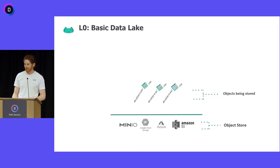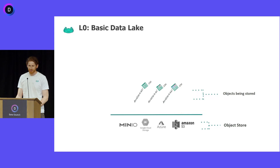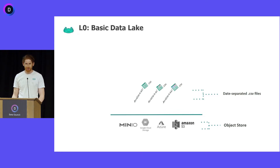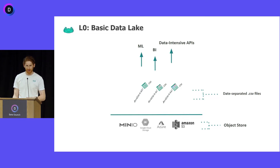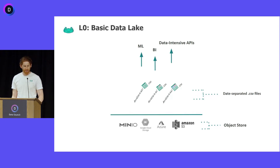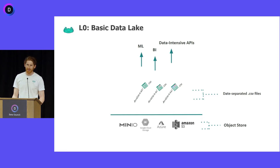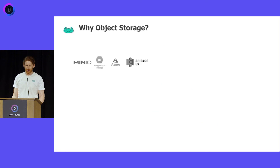If you're just getting started with a data lake, you might have something like CSV files that every day you save under a date partition path. With this basic architecture, you are in a pretty good spot to handle all of the use cases for data, like business intelligence, machine learning, model development, and data intensive APIs or operational analytics. The flexibility to do all of these use cases speaks to the strength of object stores.